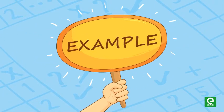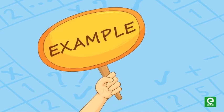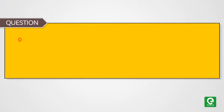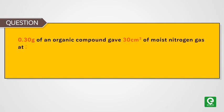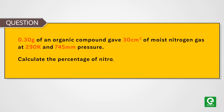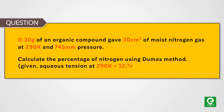Let's solve an example to estimate the percentage of nitrogen in an unknown compound. Question: 0.30 gram of an organic compound gave 30 centimeter cube of moist nitrogen gas at 290 Kelvin and 745 mm pressure. Calculate the percentage of nitrogen using Dumas method. Given aqueous tension at 290 Kelvin is 12.7 mm.